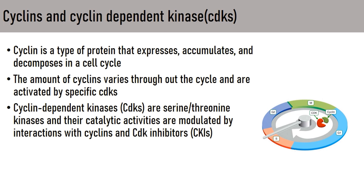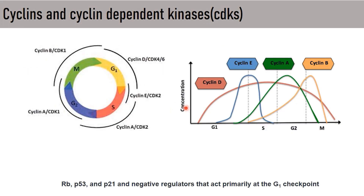The cell cycle must progress in an ordered fashion: DNA replication, followed by chromosomal separation, followed by cytokinesis, and so on. The two protein complexes — cyclins and CDKs — ensure this ordered progression. Cyclin, as the name suggests, is a protein that accumulates and decomposes in a cyclic manner, with its expression varying depending on the phase of the cell cycle. Cyclins activate cyclin-dependent kinases (CDKs), which are serine-threonine kinases whose catalytic activity is modulated by interaction with cyclins and CDK inhibitors. This pictorial image shows the cyclin-CDK complexes at different phases of the cell cycle.